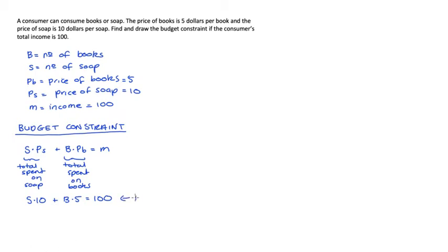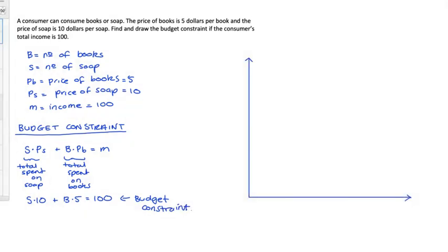In order to draw it, I'm going to first need to figure out which good I want on the vertical axis and which I want on the horizontal axis. I'm going to put soap on the horizontal and books on the vertical. It doesn't really matter as long as you don't get confused and you know where you are.